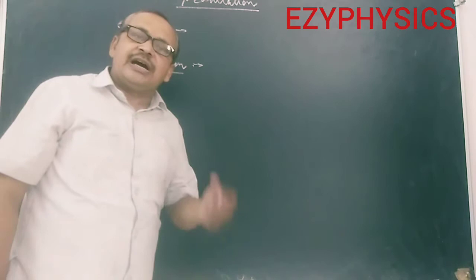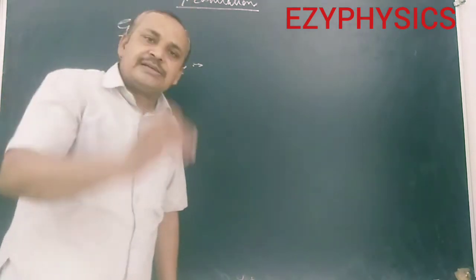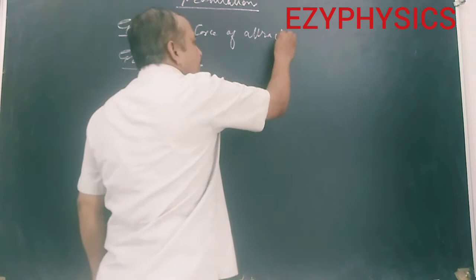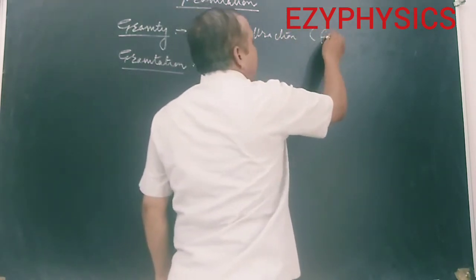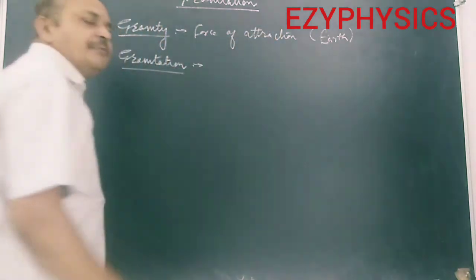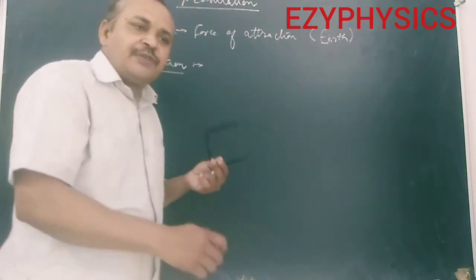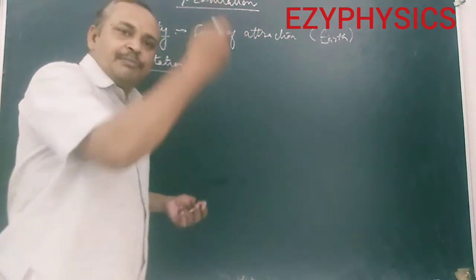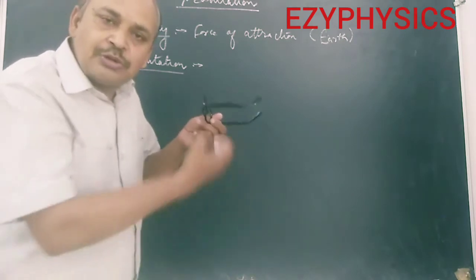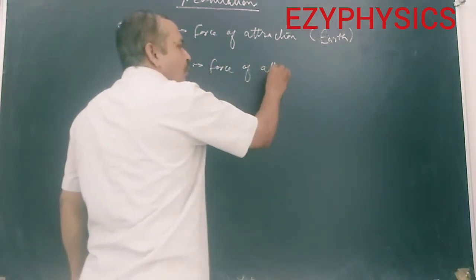Gravity is basically the force of attraction with which a body is pulled towards the center of the earth. Whenever you release a piece of chalk or specs, it will automatically fall down. The reason is very simple: because of gravity, the earth is pulling that object towards its center.